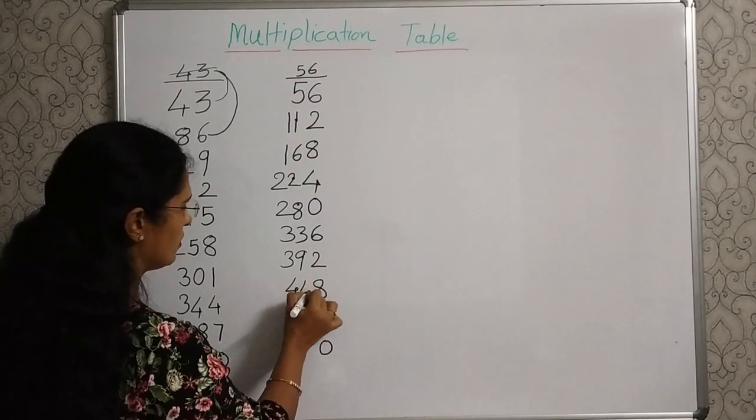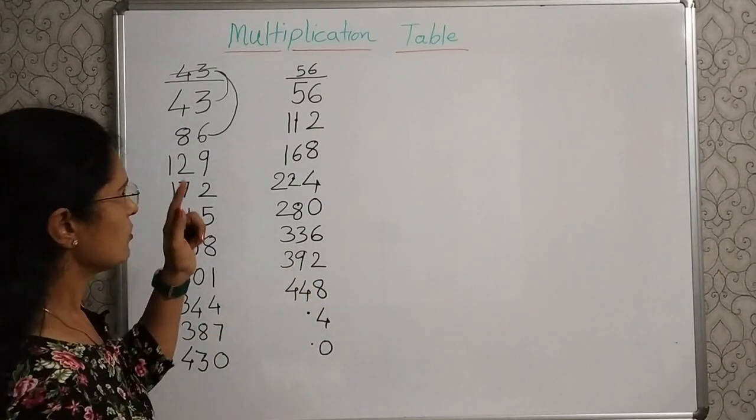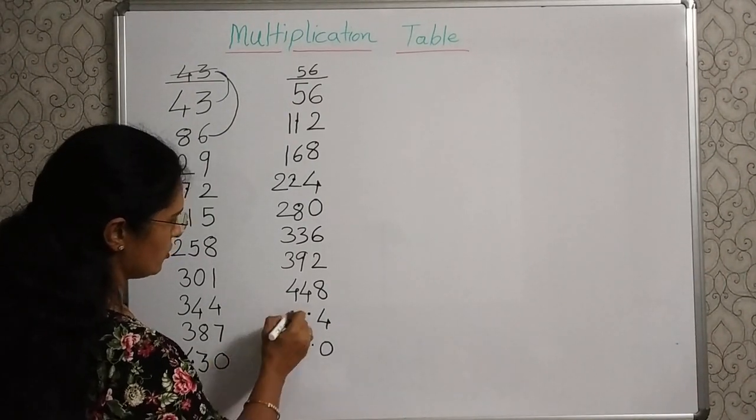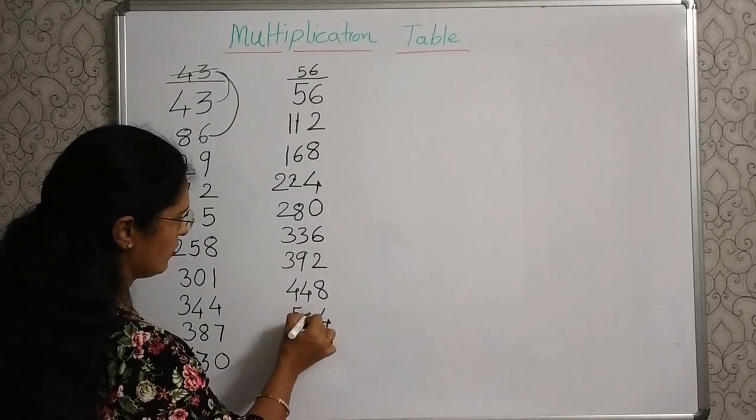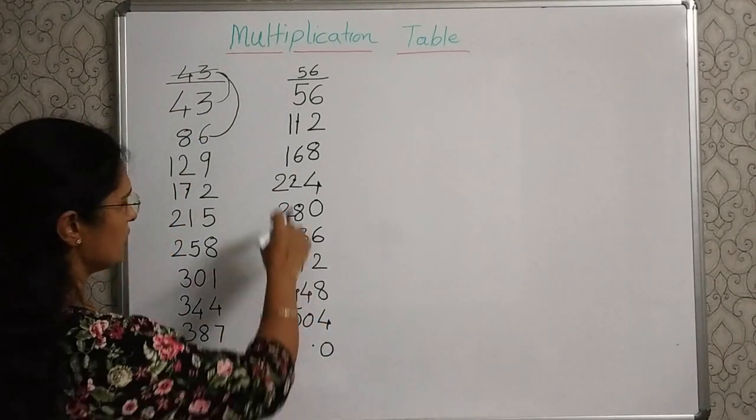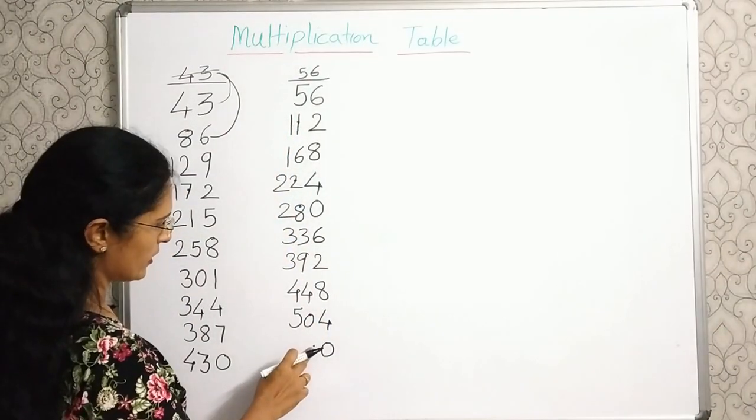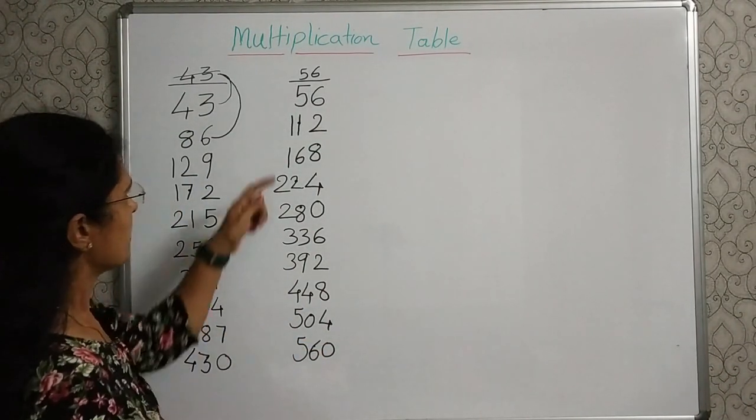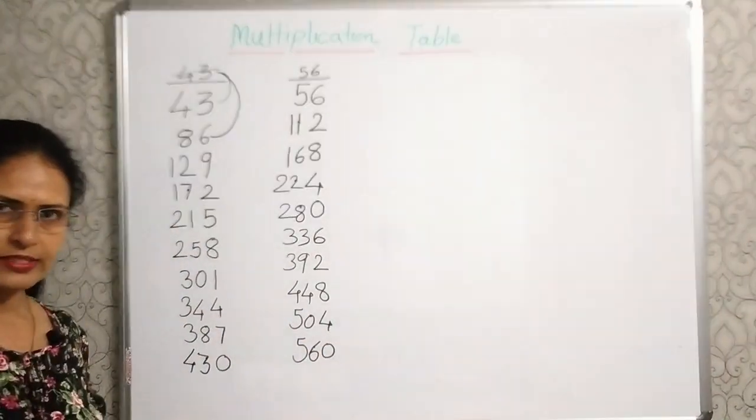39 plus 5, 44, right here. 44 plus 5, 49. And this dot, so it is 50. 50 plus 5, 55. And this carryover 1. So, it will be 56. That is 56 tens or 560. So, your table is correct.